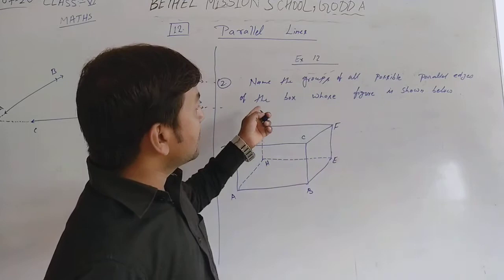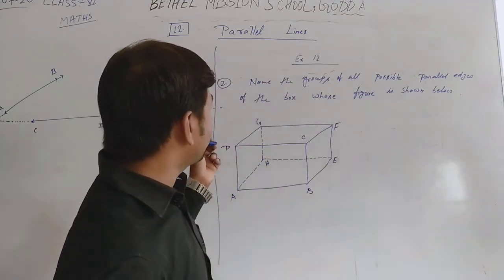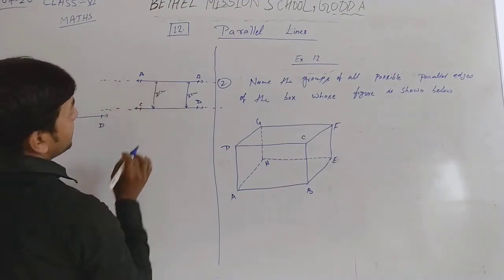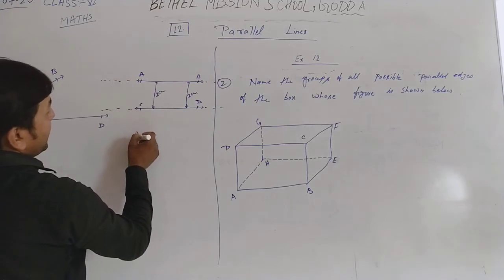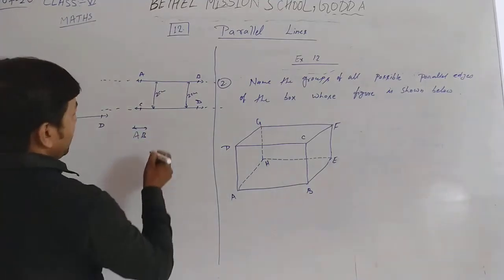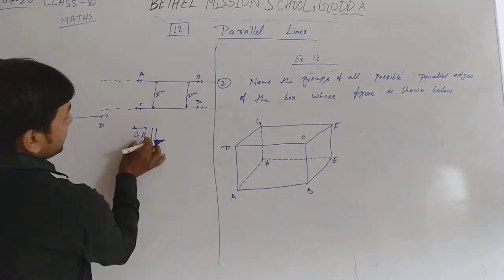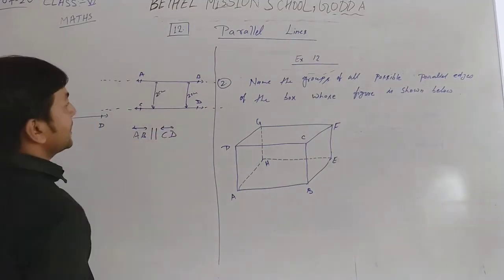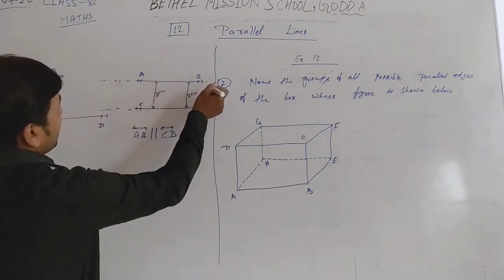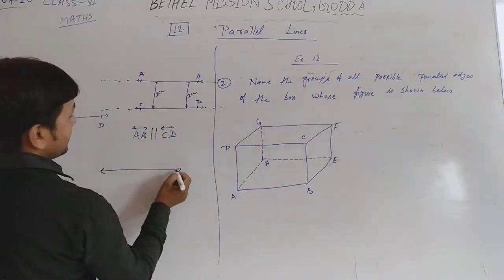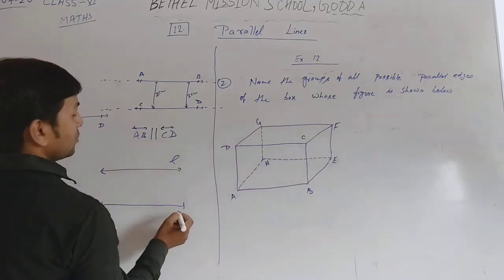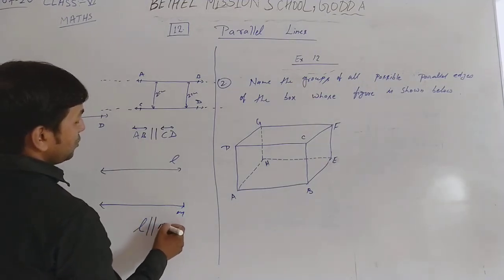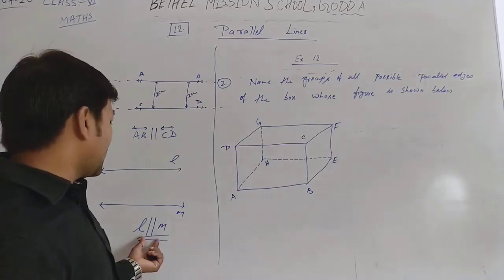Now we look at some examples. First, you should know how to write the name of parallel lines. You can say AB is parallel to CD. Or if the lines are named L and M, then you say L is parallel to M. The symbol for parallel lines is this one.